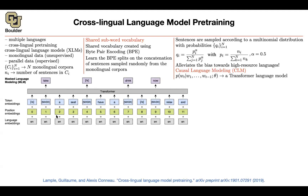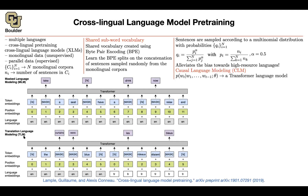If you have parallel data — pairs of translations — that's a luxury you can use, and it's called TLM: translation language modeling. So we have CLM, MLM, and TLM. In TLM, you have pairs of sentences in English and French, feed the entire pair into your transformer, and predict some masked words in English and some in French, then train it.